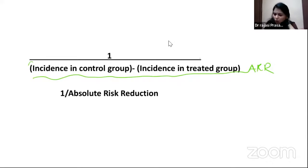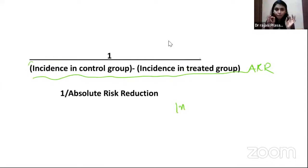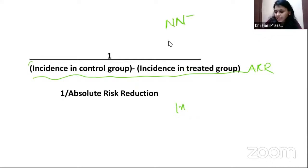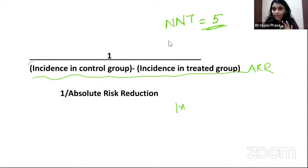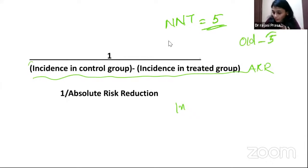To summarize NNT: the minimum number of patients needed to be treated to get one additional cure compared to the other drug. Less the number needed to treat, better the drug, because you get 1 extra cure by treating fewer patients.